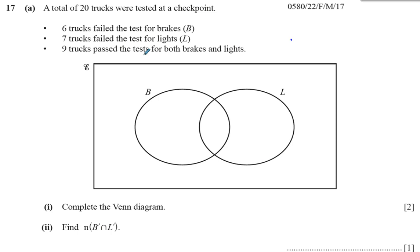And there's 9 trucks that passed the test for both brakes and lights. So, they must be obviously the ones that are on the outside. There's 9 trucks that passed the test for brakes and passed the test for lights as well. So, they're going to be outside the two circles. What's outside the two circles represents those that basically passed the tests, didn't fail any of the tests, but they're still within those 20 trucks that were tested.